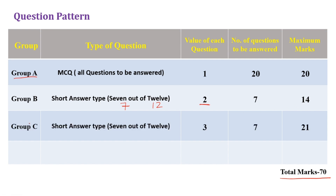Third is Group C, again short type questions. There are 12 questions total and you have to answer 7. But each question here carries 3 marks. So 7 into 3 equals 21 marks.